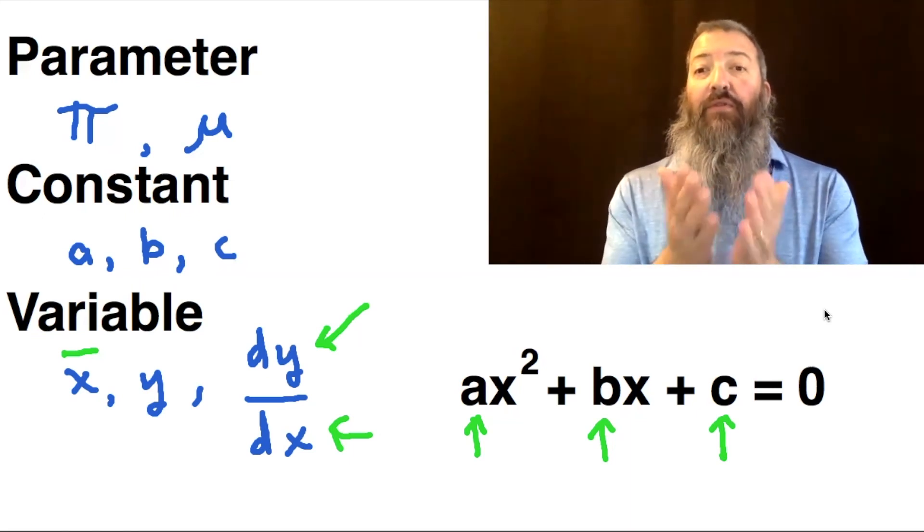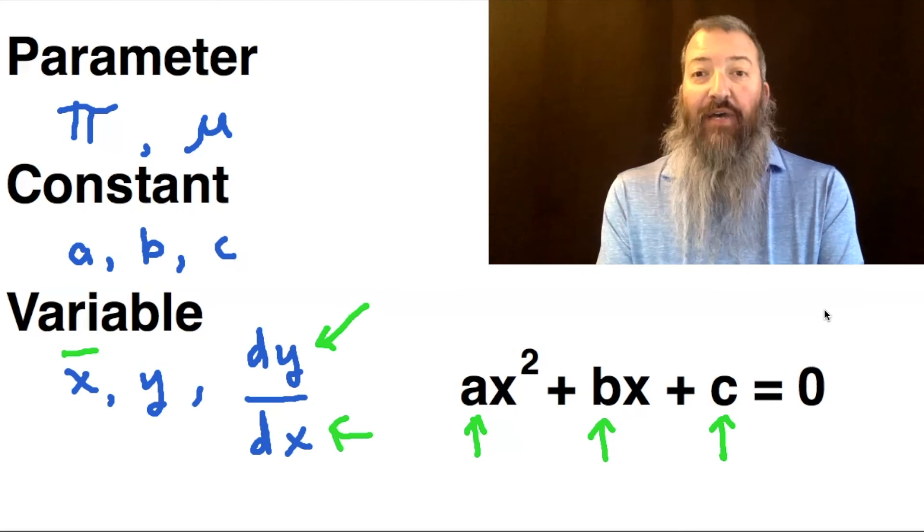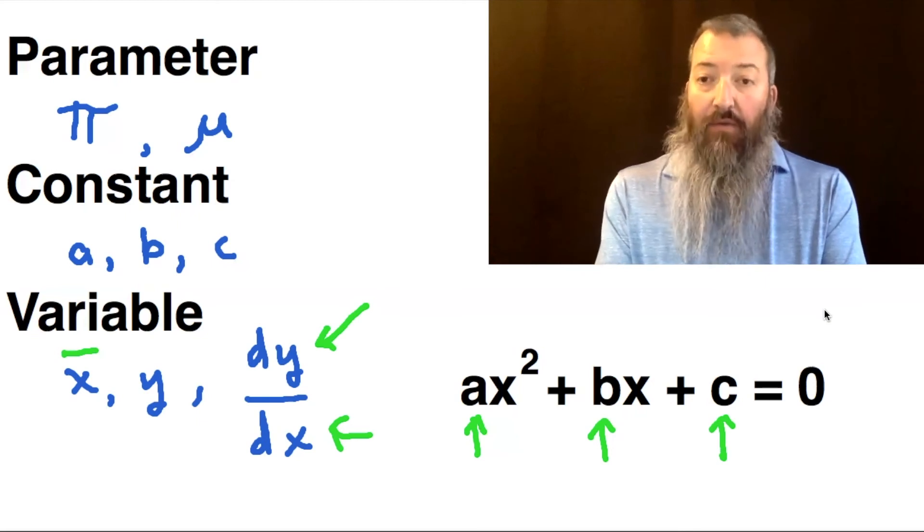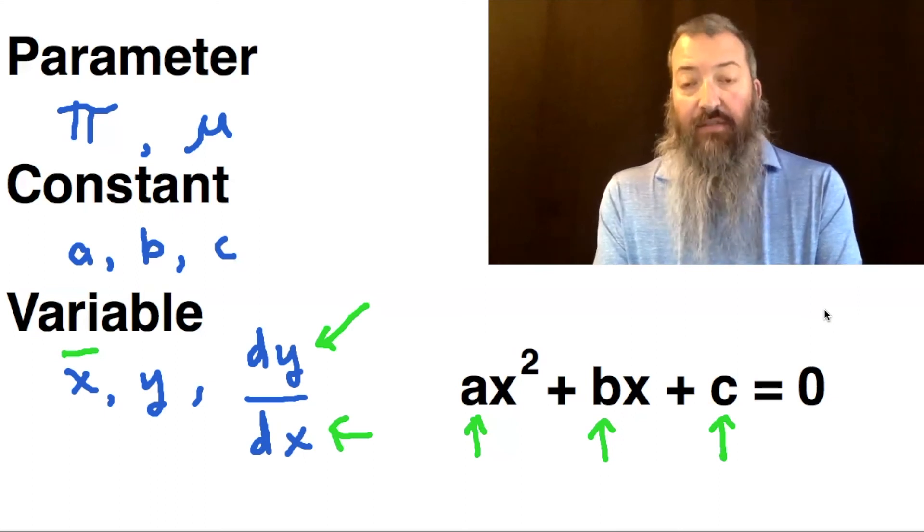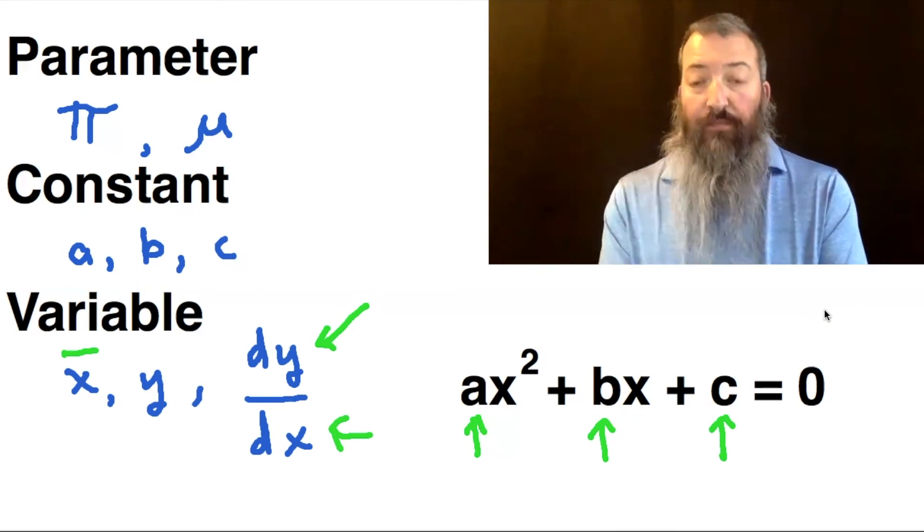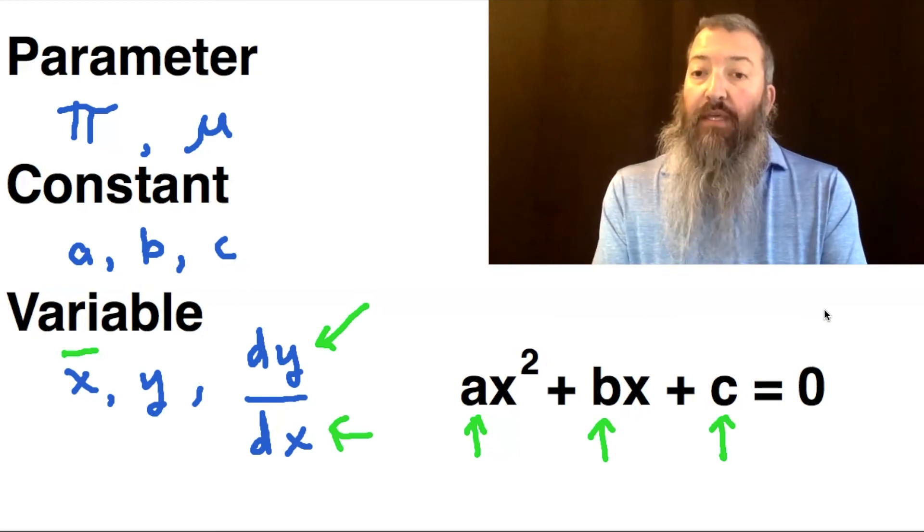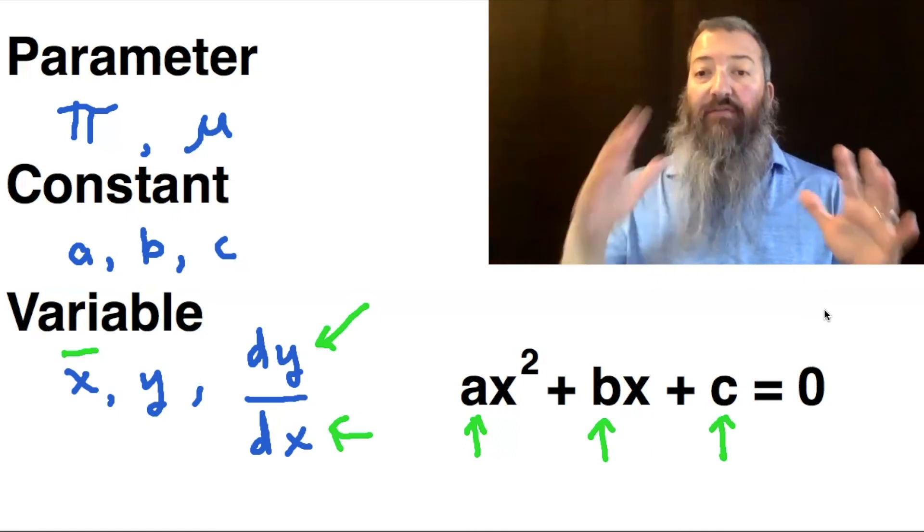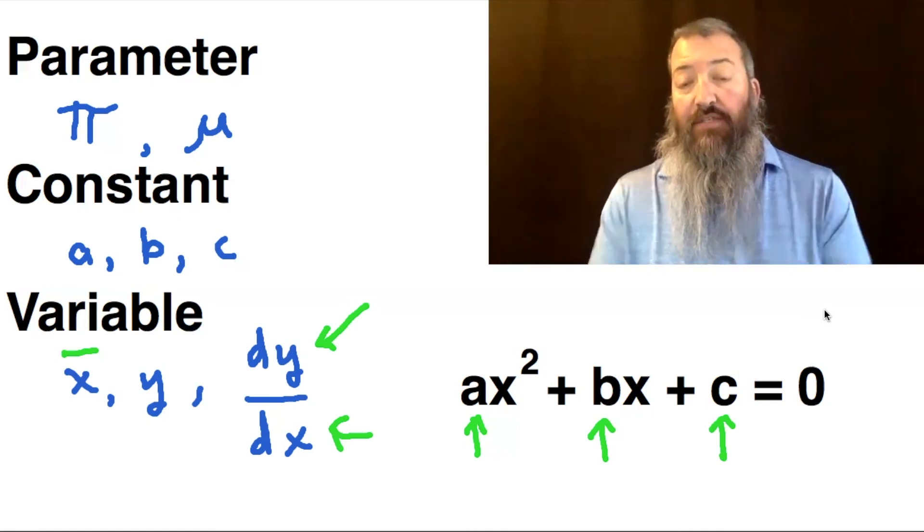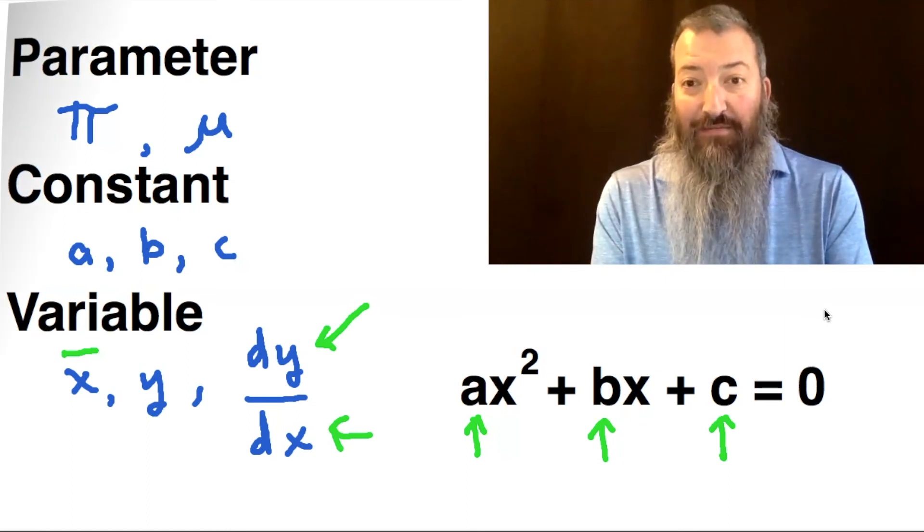So the general shape of this quadratic equation is determined by its degree, which is the highest exponent of the variable x. In this case, 2. But the roots and the concavity is actually determined by the parameters a, b, and c.